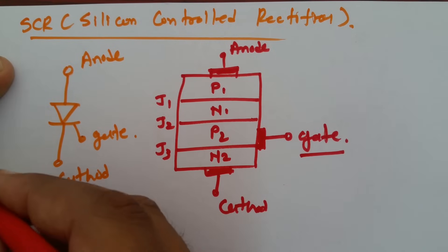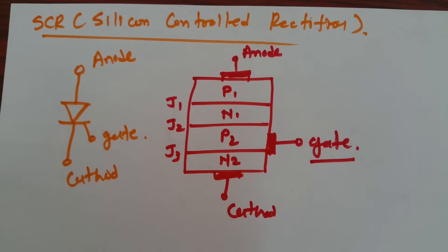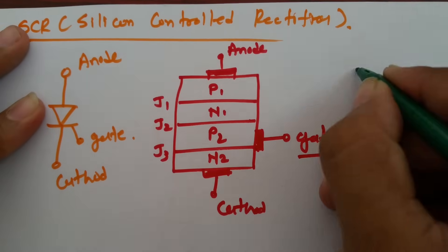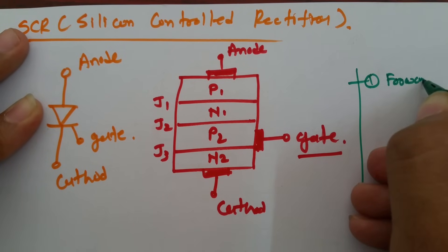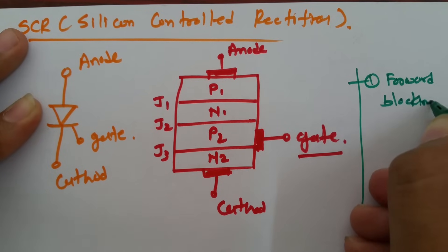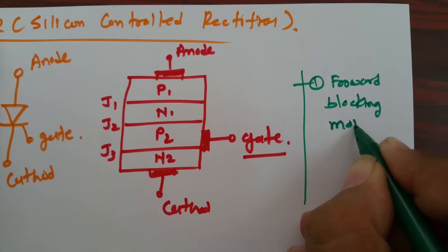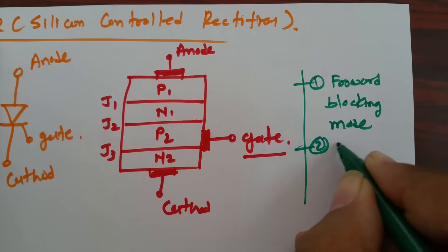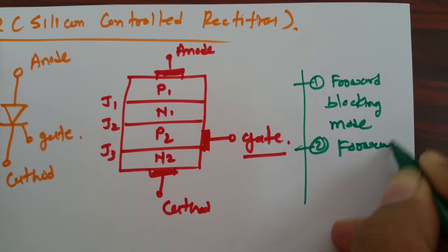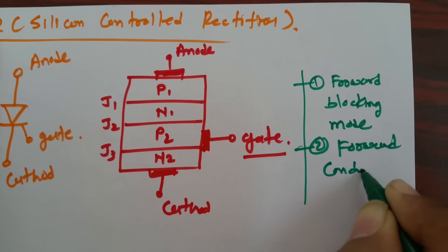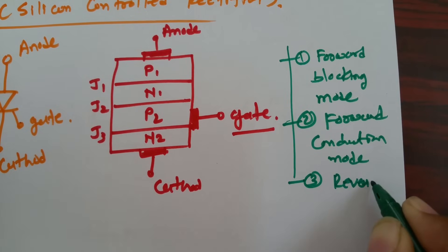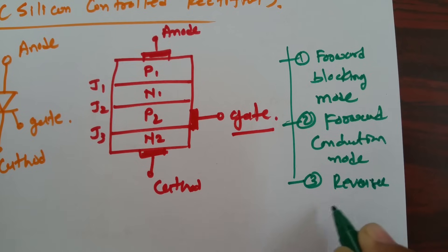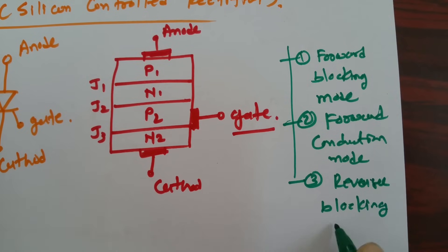SCR basically works in three different modes. The first mode is forward blocking mode. The second mode is forward conduction mode. The third mode is reverse blocking mode.